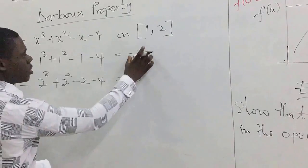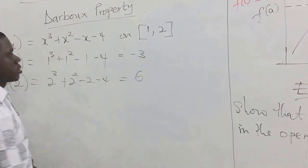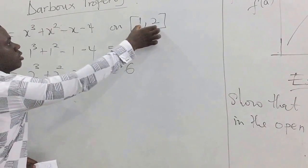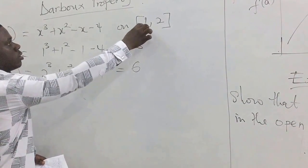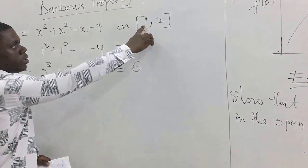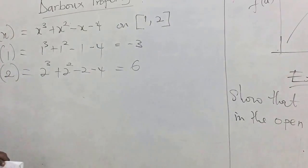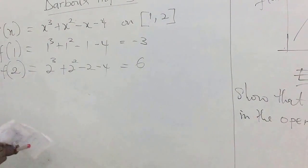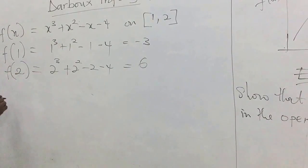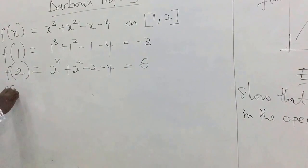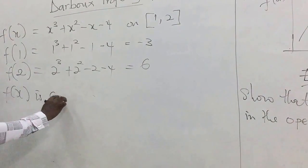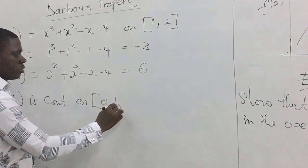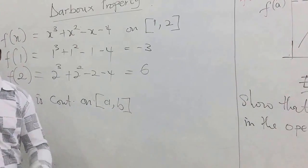We realize that these values are real numbers. By substituting the endpoints of the closed interval into the function we are getting these values, which means that the function is continuous on the closed interval. So f(x) is continuous on [1, 2], and one aspect of the property has been satisfied.